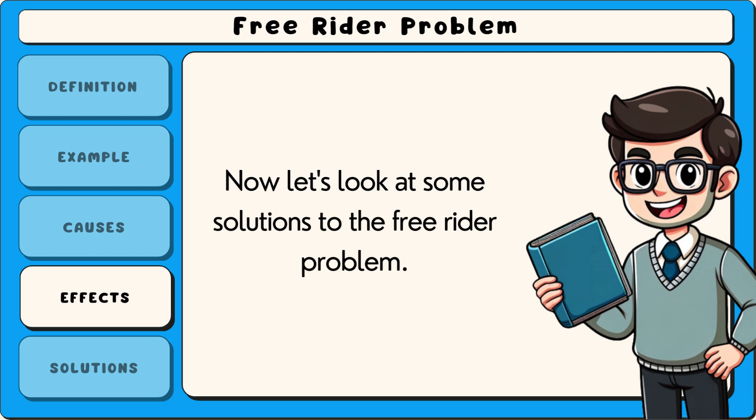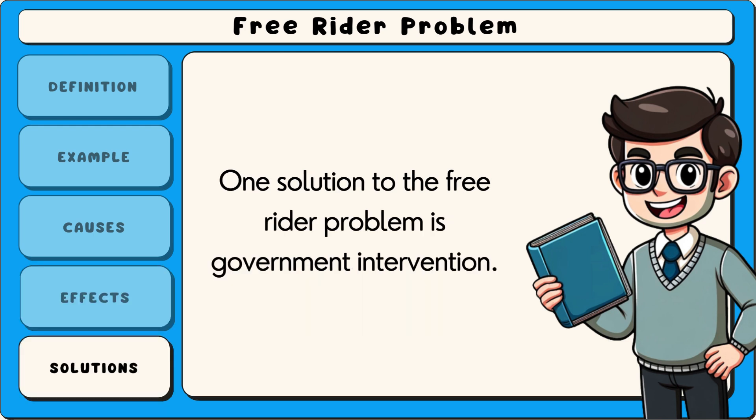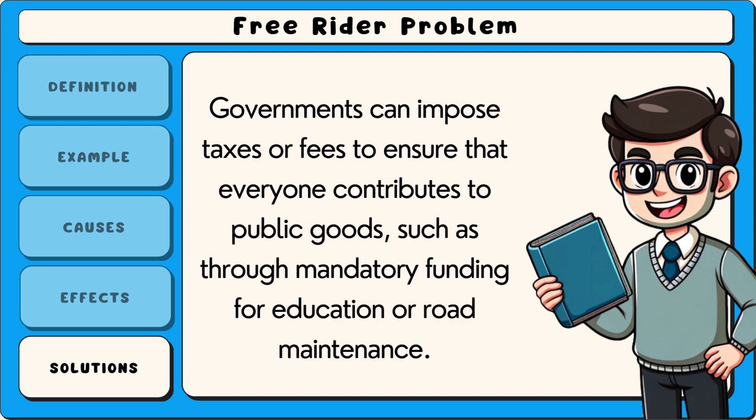Now let's look at some solutions to the free rider problem. One solution is government intervention. Governments can impose taxes or fees to ensure that everyone contributes to public goods, such as through mandatory funding for education or road maintenance.